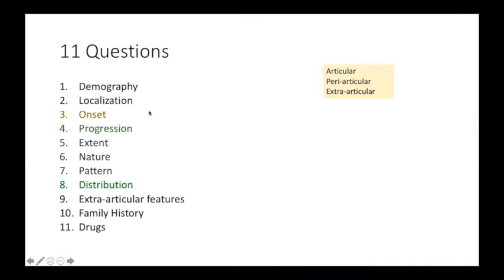When we talk about the onset, we want to know whether it is acute — which is less than six weeks — or chronic, which is more than six months.